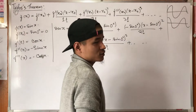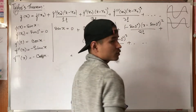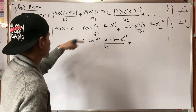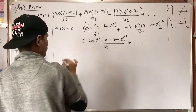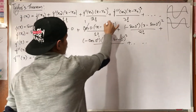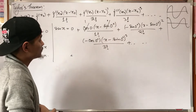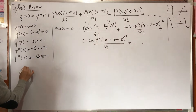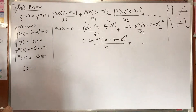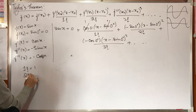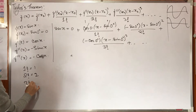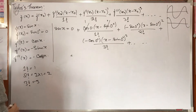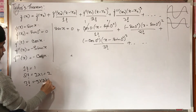Sin(0 degrees) is zero. 1 factorial is 1. 2 factorial is 2. 3 factorial is 3 times 2 times 1, which equals 6. 4 factorial, 5 factorial — the multiplication continues.